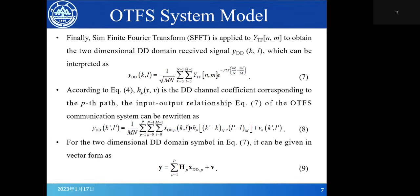According to equation 4, h_p(τ,ν) is the DD channel coefficient corresponding to the p-th path. The input-output relationship equation 7 of the OTFS communication system can be rewritten as equation 8, and we give the vector form as equation 9.